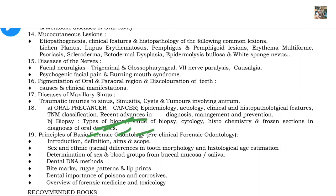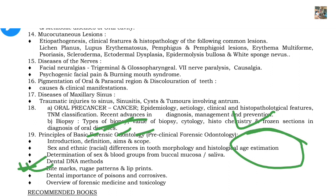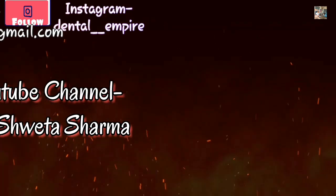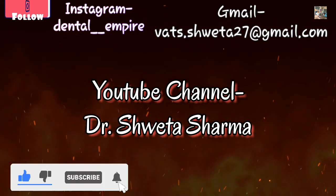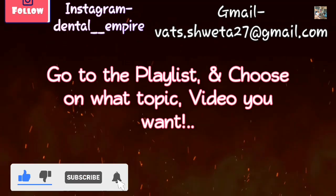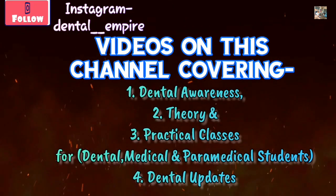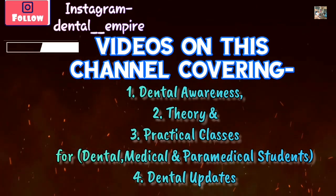The last topic is basic forensic odontology — its definition, aims and scope. The most important questions here are bite marks (including their types and how impressions are taken) and age estimation. Just as every person has unique thumb prints, every person also has unique lip prints — rugae patterns differ for each individual. That covers the complete oral pathology syllabus. If you found this video helpful, press the like button, subscribe to the channel, and press the bell icon for notifications. Thank you and be happy.